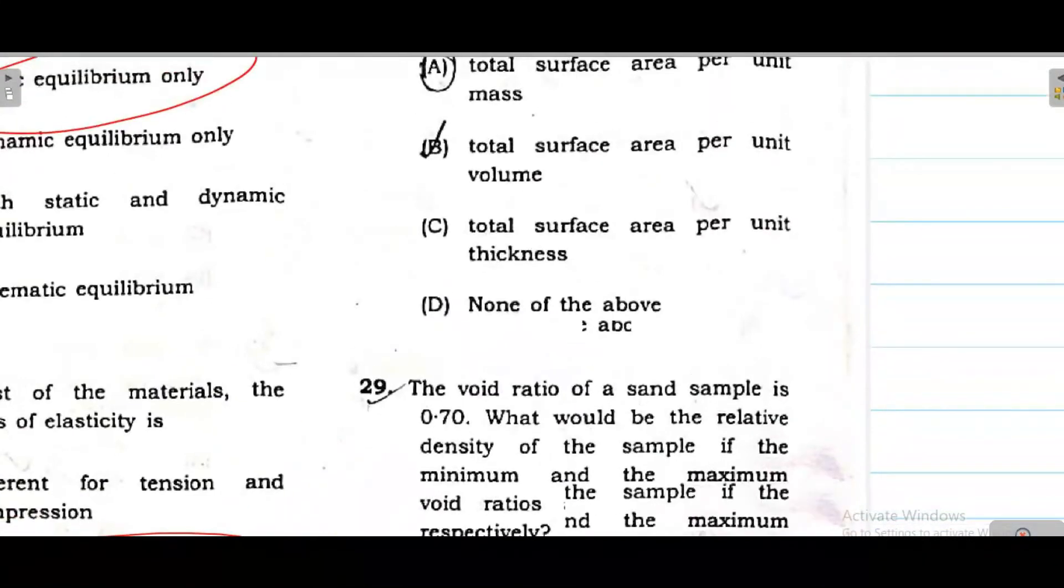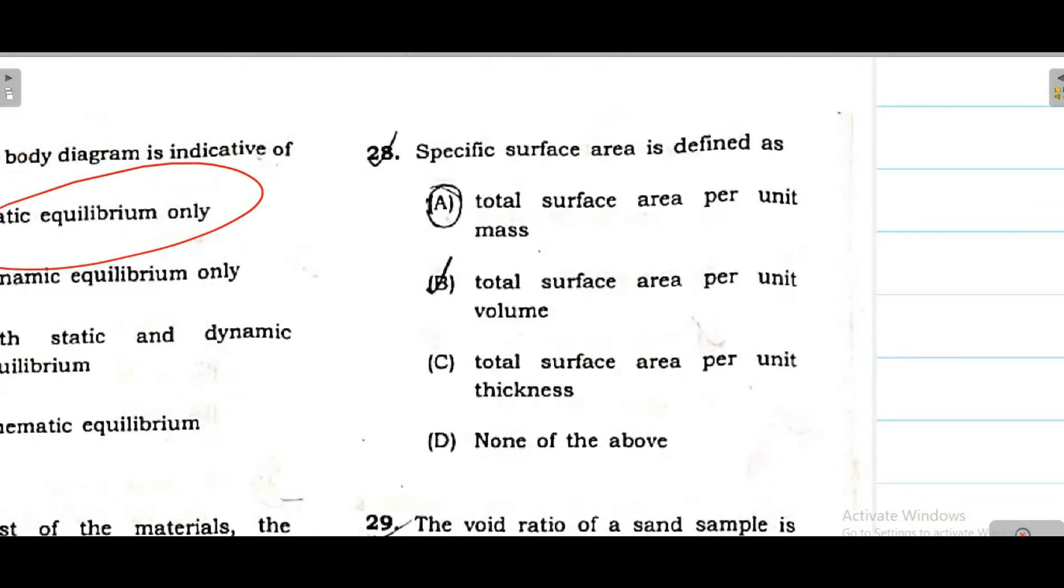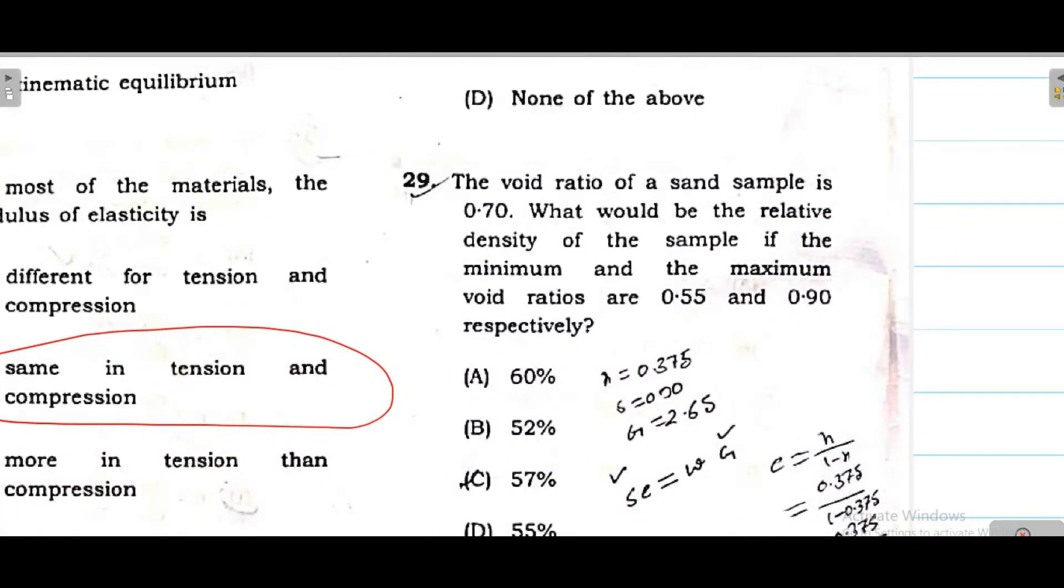Question 28 - specific surface area means total surface area divided by per unit mass. Mass divided by area. So option A is correct. Next question 29 - if the void ratio of a soil sample is 0.70, what would be the relative density if maximum and minimum void ratio is given? The formula is E max minus E in situ divided by E max minus E minimum into 100 percent. That will be the relative density. E max value is 0.90, E minimum 0.55, E in situ is 0.70 into 100 percent. Option number C is correct.